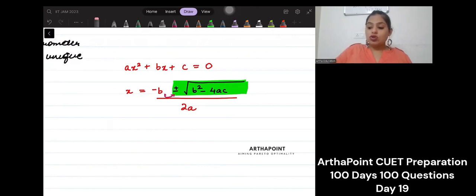But now just imagine, if this part itself becomes 0, then the only solution of x that would be possible will be minus b divided by 2a. This is the only solution that would be possible.